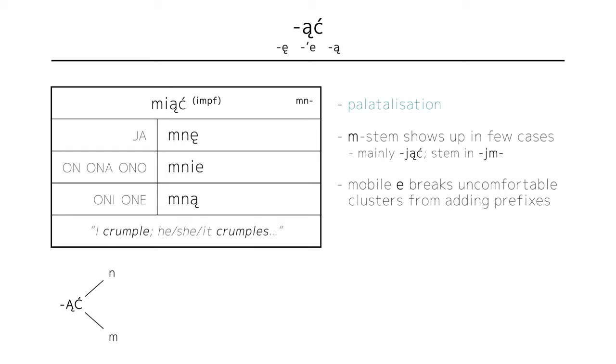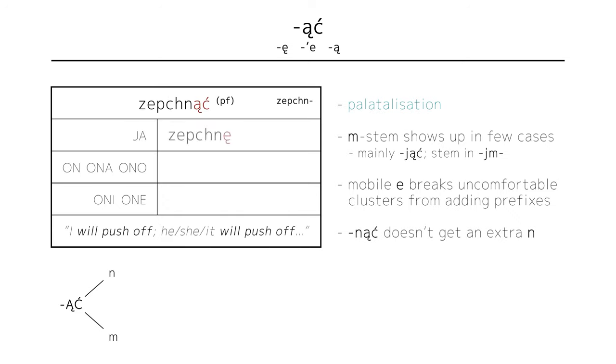If the verb ends in -nąć, very common, mind you, then you don't need to add another n. So, zepchnąć, to push off, conjugates as zepchnę, I will push off, zepchnie, he, she, it will push off, and zepchnął, they will push off.